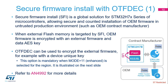Secure Firmware Install, or SFI, is a global solution for the STM32H7B series, allowing secure and counted installation of OEM firmware in untrusted production environments such as an OEM contract manufacturer. OEM firmware protected by SFI can be stored in the device's embedded flash or encrypted in external flash connected via OctoSPI. When external flash memory is targeted by SFI, OEM firmware code must be encrypted with an external firmware and data AES key. This key can be common to all devices — in which case tools can perform the encryption if OTF-DEC mode equals 1-0 — or unique per device, which is mandatory if OTF-DEC mode equals 1-1.